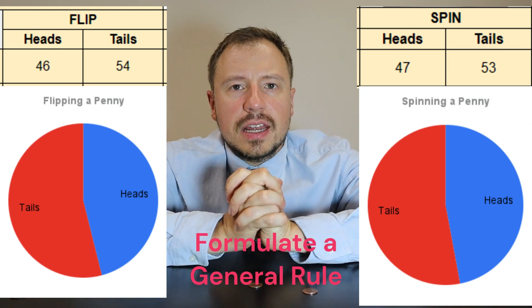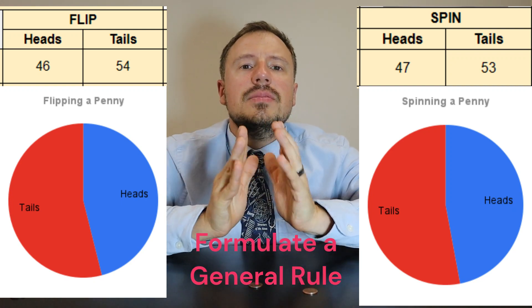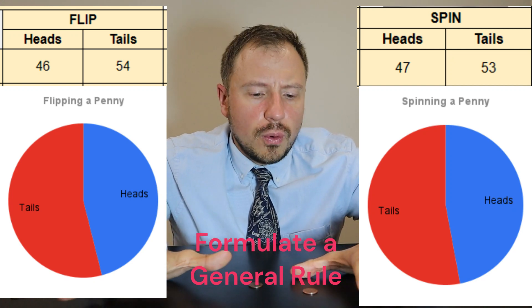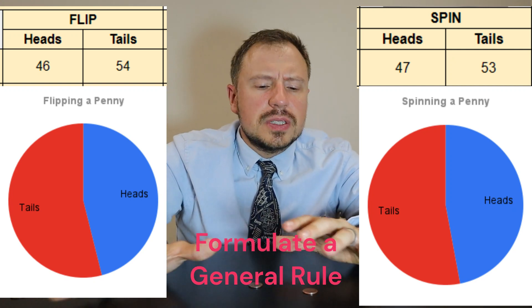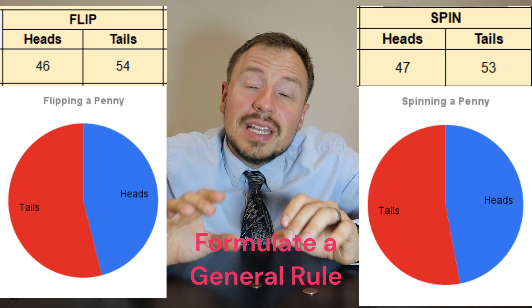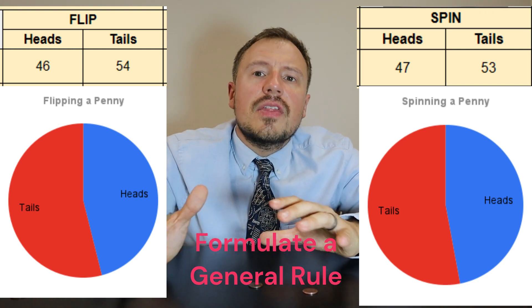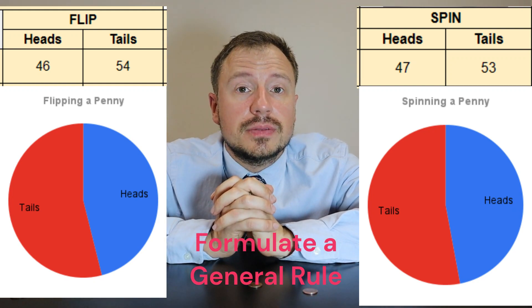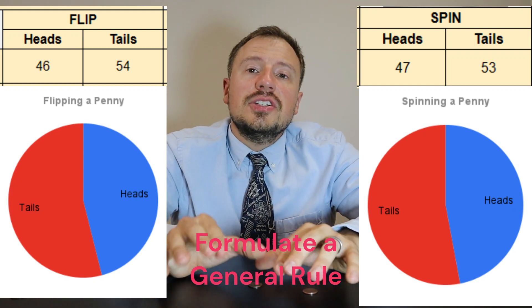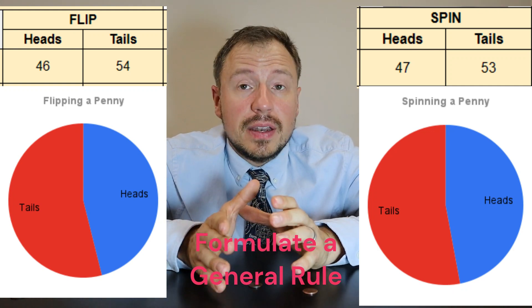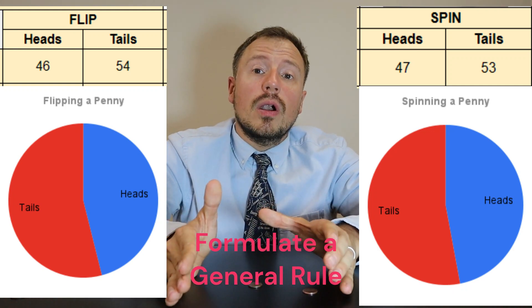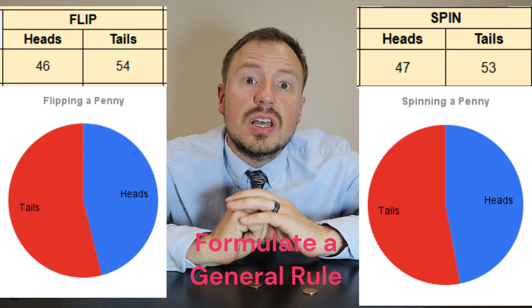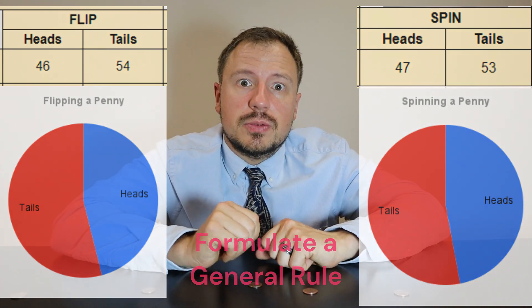The last step in the scientific method is to formulate a general rule. Looking at the data, you'll notice it comes out to about 50% each. There are limitations here — with only 100 spins and 100 flips, there can still be a wide difference between the number of heads and tails. A limitation of this lab is the number of trials; we should probably do more, perhaps a thousand spins and flips, to make the data more reliable.